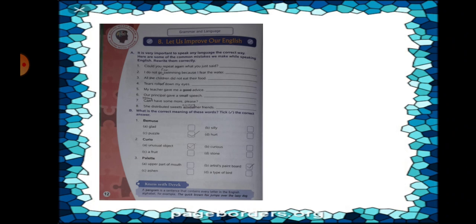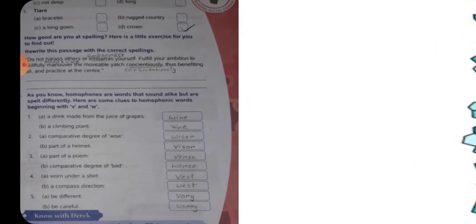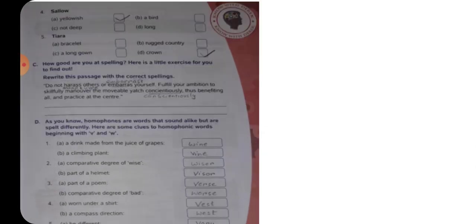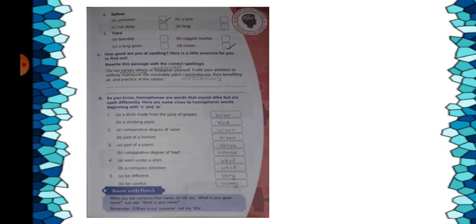Now we are moving to our next page. Number 13. Here also we have got some words and we are going to take on the correct meanings. Number 4 is sallow. S-A-L-L-O-W. And it means yellowish. Number A, yellowish. You will take mark on yellowish.